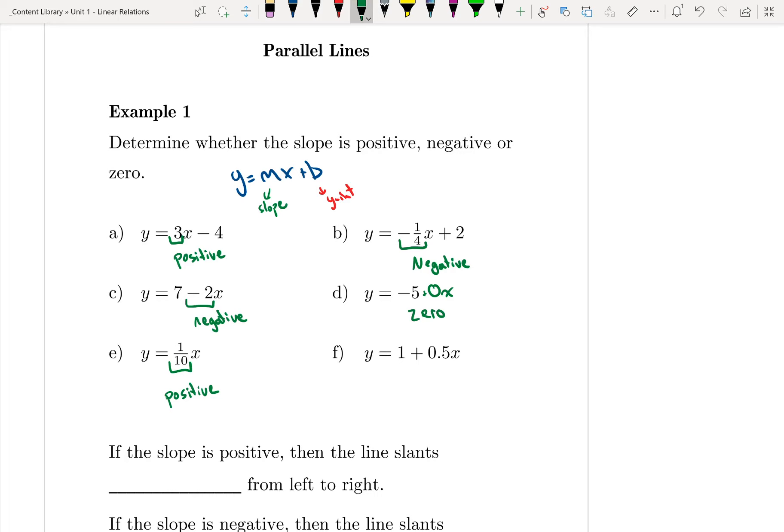For f, it's rearranged, it's a decimal slope. Either way, though, my slope is still positive.